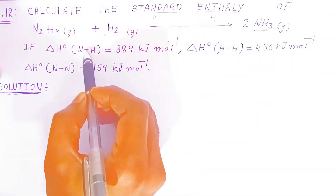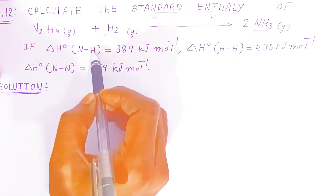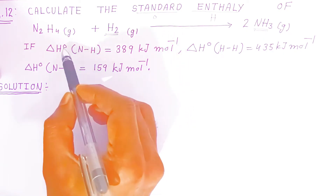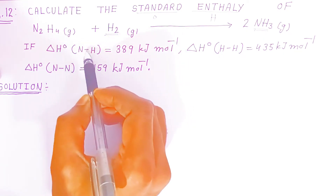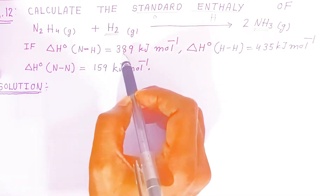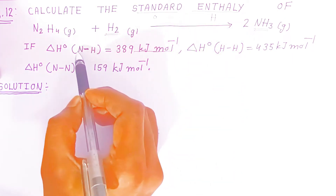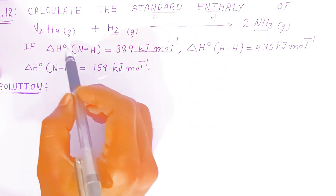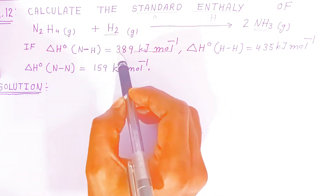The bond enthalpy values are given. The standard bond enthalpy of the nitrogen-hydrogen (N–H) bond is given as 389 kilojoules per mole.